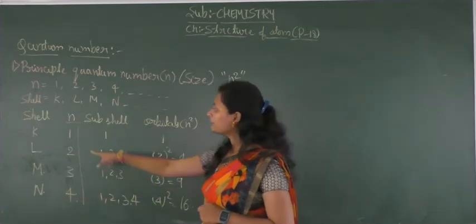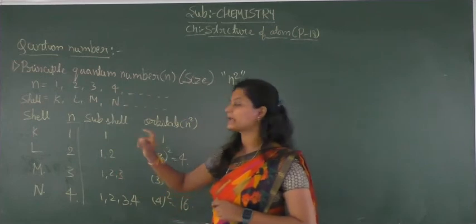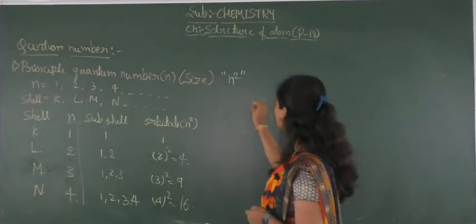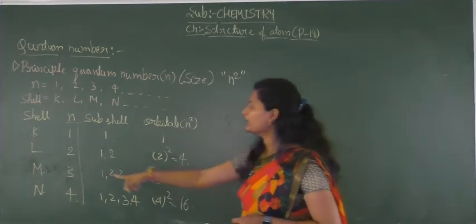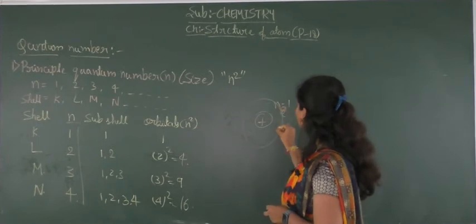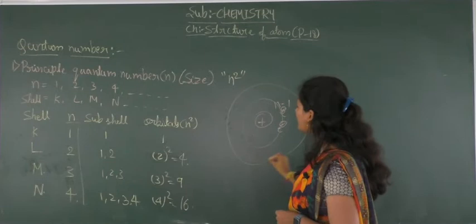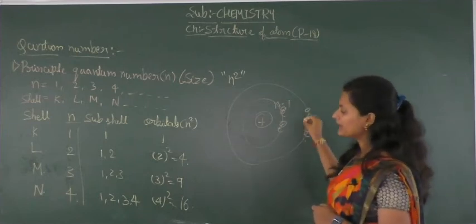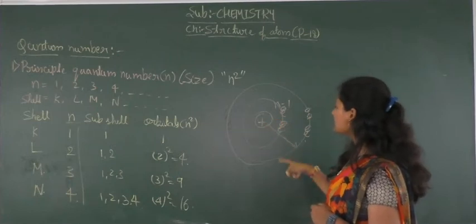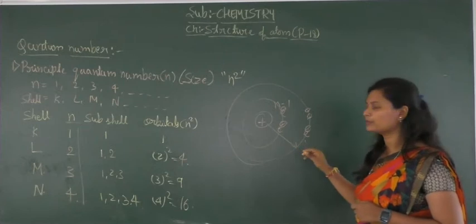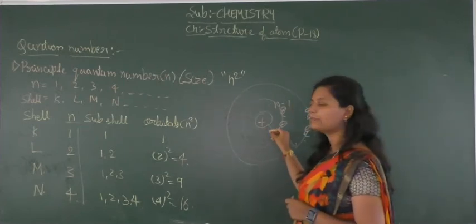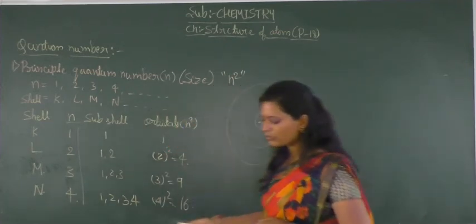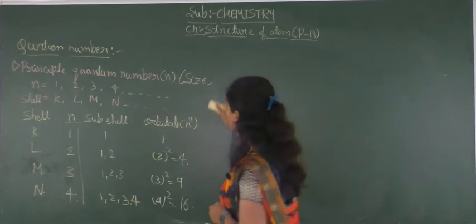If the n value is small, the electrons are near to the nucleus, meaning the size of the orbital is small. As the number of n increases, the electrons are located farther away from the nucleus. If n is small, electrons are near to the nucleus. I hope you understood about the principal quantum number.